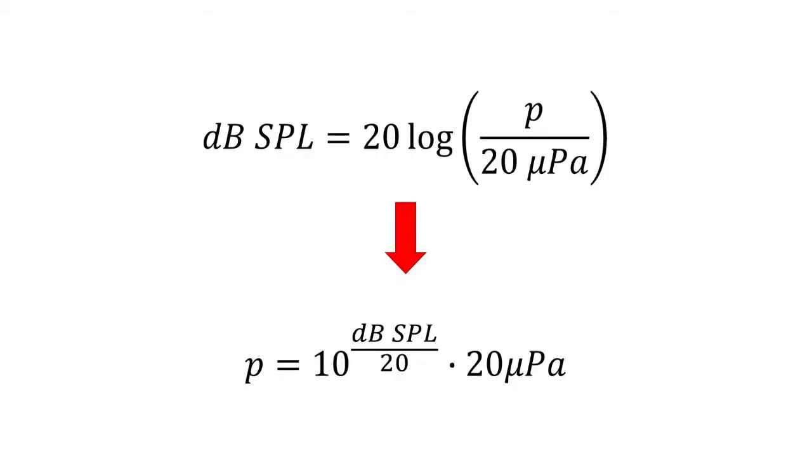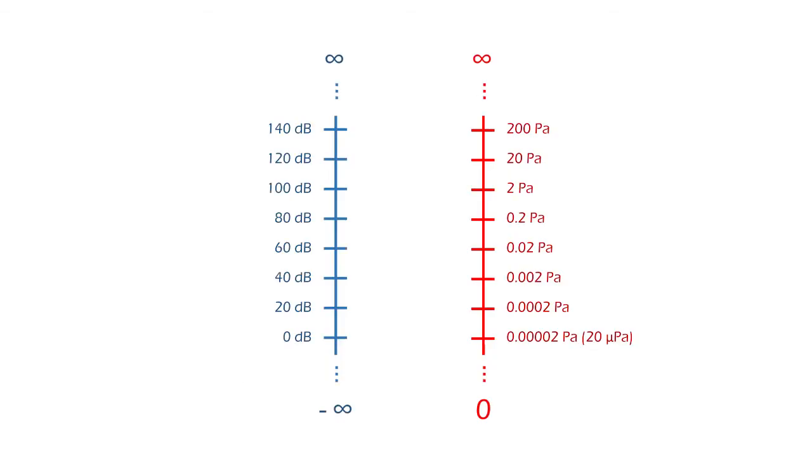If we convert these sound levels to pascals by solving the decibel formula, we obtain these results. As you can see, decibels reduce the broad range between 20 micropascals and 200 pascals. Plus, they convert the exponential increment of pressure to a linear increment.